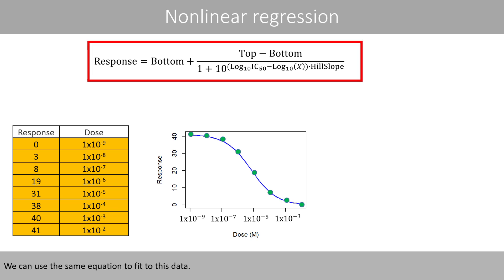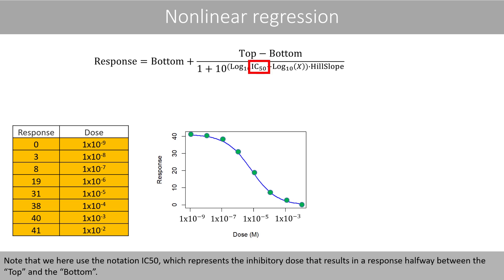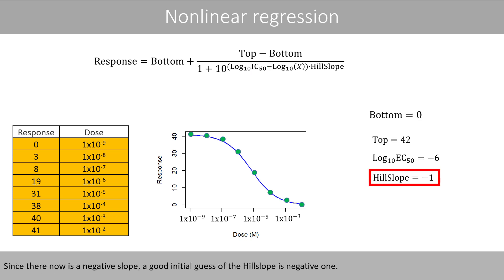We can use the same equation to fit to this data. Note that we here use the notation IC50, which represents the inhibitory dose that results in the response halfway between the top and the bottom. Since there now is a negative slope, a good initial guess of the hill slope is negative one.